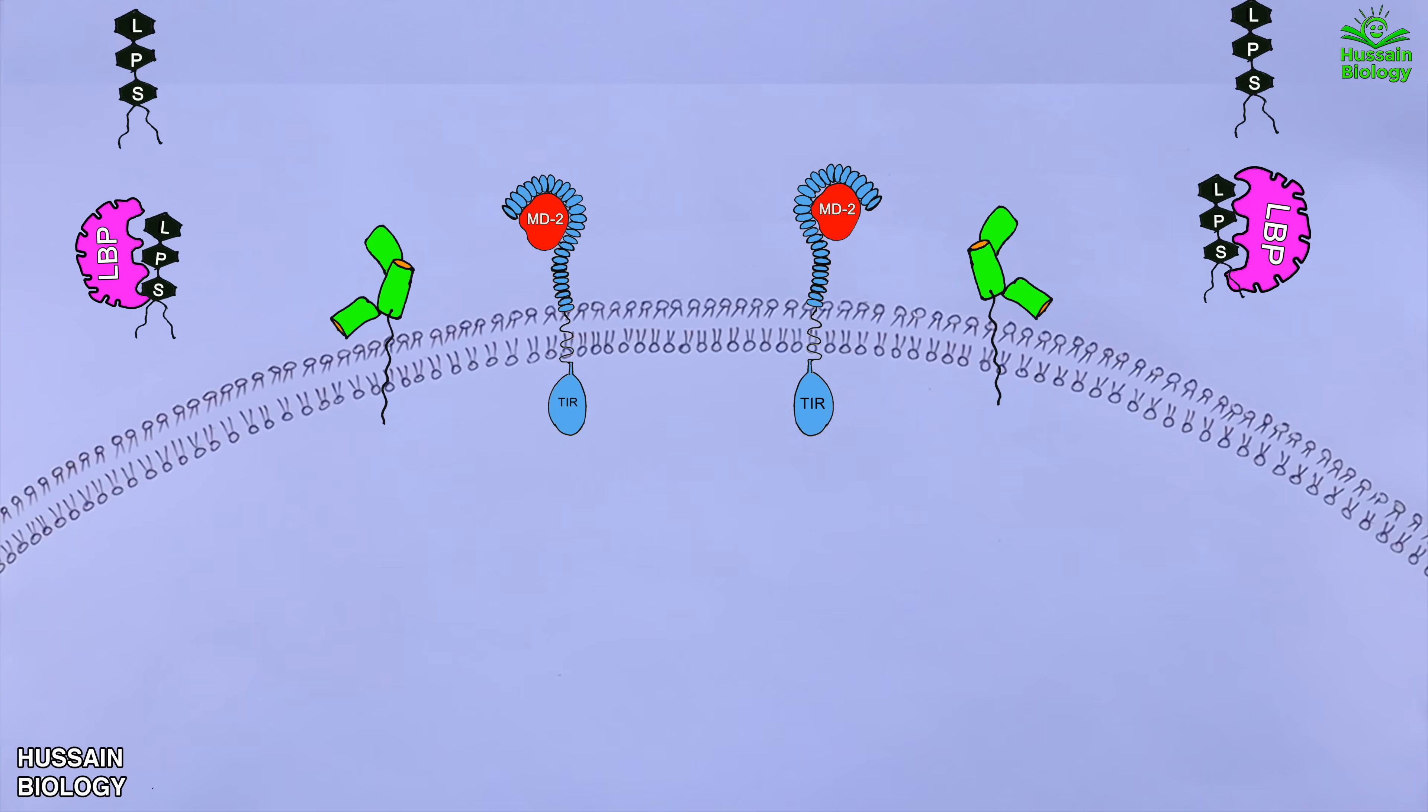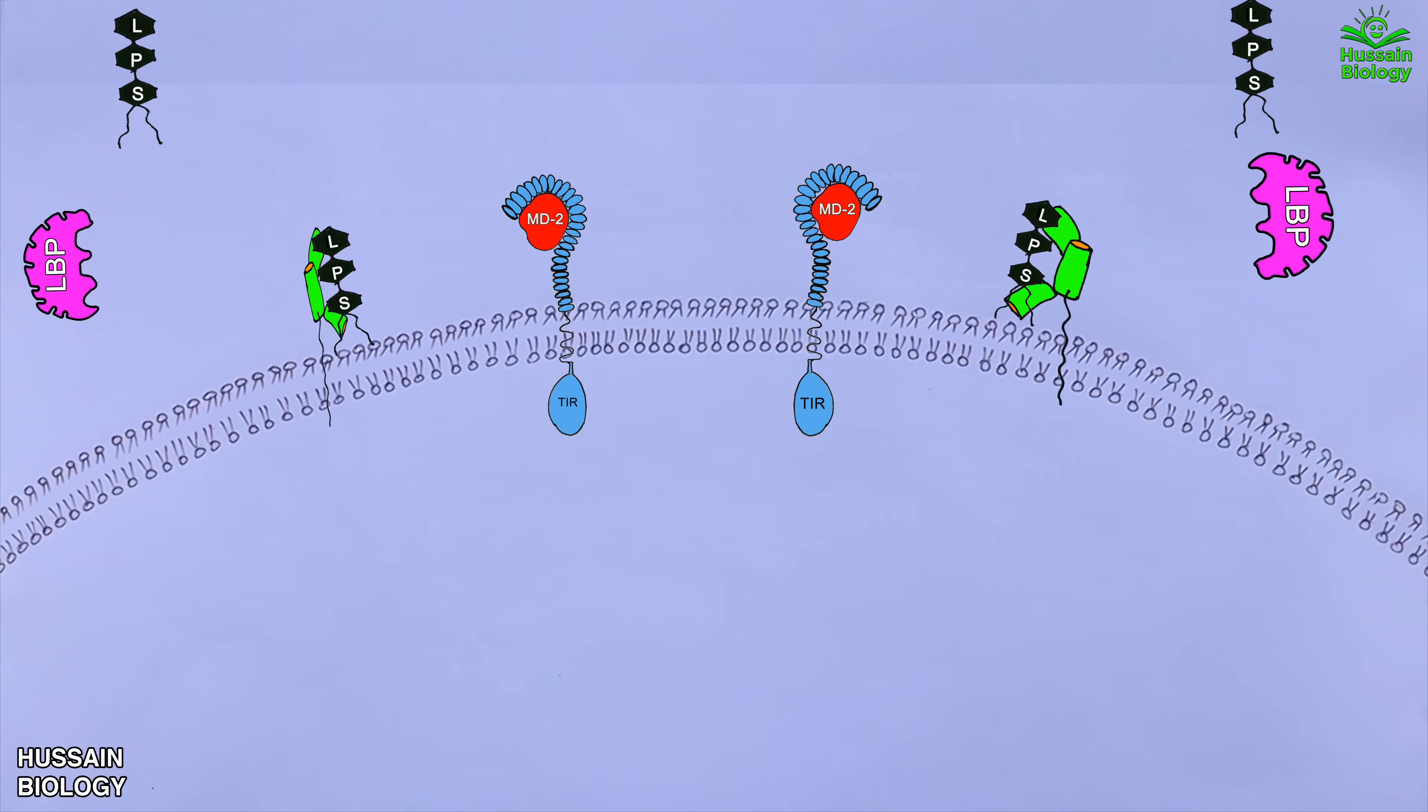Then this LBP protein takes the LPS molecule and gives it to the CD14 as shown in the animation on cell membrane. So we have LPS now with CD14 molecule. And this CD14 molecule interacts with MD2 TLR4 complex. And in that interaction the LPS molecule is given to the MD2 protein which then delivers it to the TLR4 protein directly as shown in the animation.